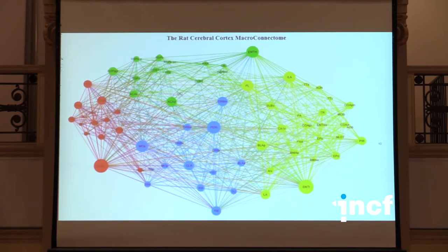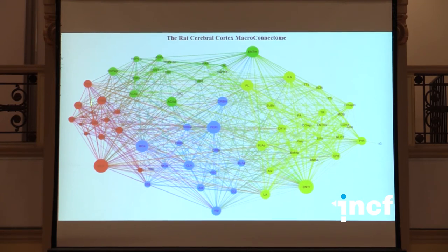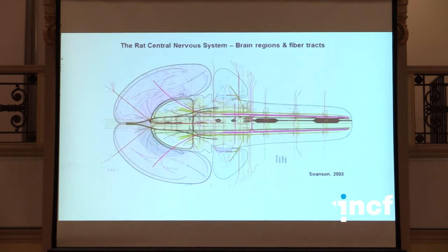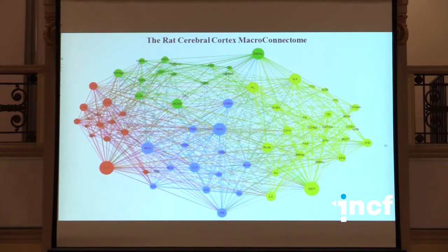Another way of representing this 73 by 73 network is as a 3D network. The colors are the ones used before: this would be the olfactory module, and this would be the visual-auditory module — look at the distance between them: very few shared connections. The green one would be the dorsal limbic module, and the blue one would be the somatomotor module. The size of the bullets is proportional to the degree of the node.